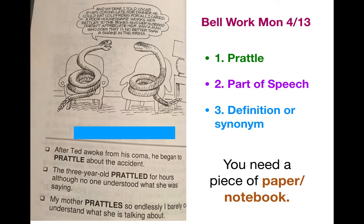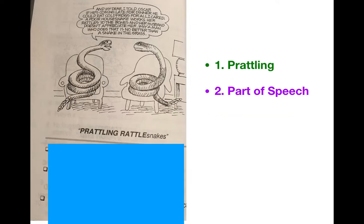But let's look at that last sentence: My mother prattles so endlessly that I can barely understand what she's talking about. That tells us a little bit more — not only does prattle mean to talk, but it also means to talk a lot, like babbling. It doesn't even make sense because there's so much of it. Look at those rattlesnakes up at the top — that one rattlesnake just prattles on and on and on, keeps babbling, keeps talking.